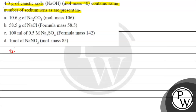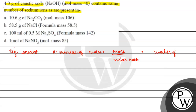The key concept for this question is: the number of moles equals mass divided by molar mass, and it also equals the number of atoms, ions, or molecules — that is, the number of elementary entities divided by Avogadro's number.